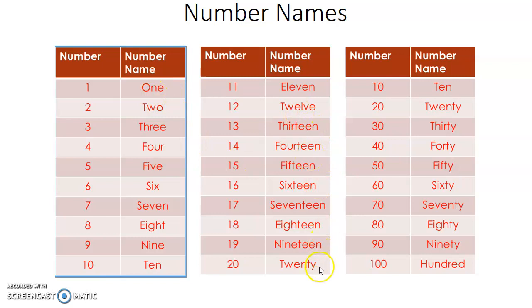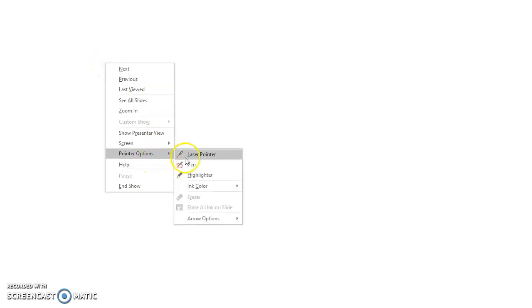First, we have to be thorough with number names from 1 to 20. So let us look at writing a few number names. This is number 67. 67 is S-I-X-T-Y, 60, S-E-V-E-N, 7. Sixty-seven.